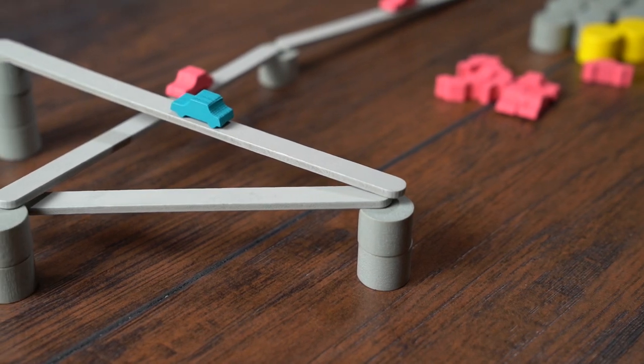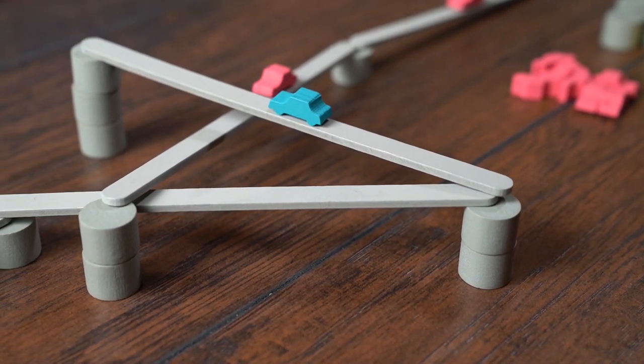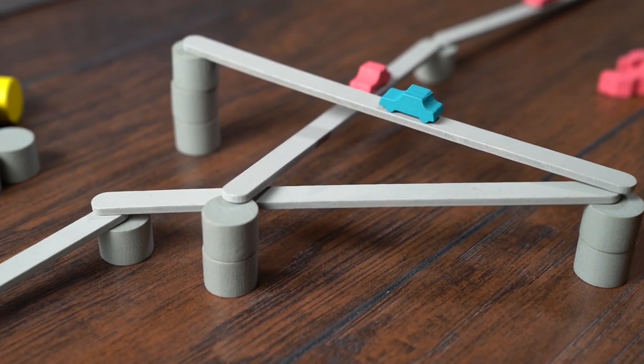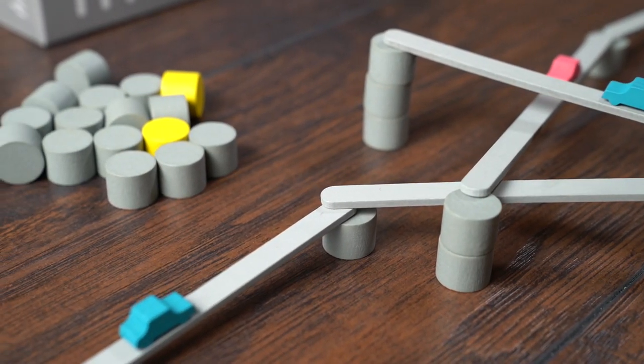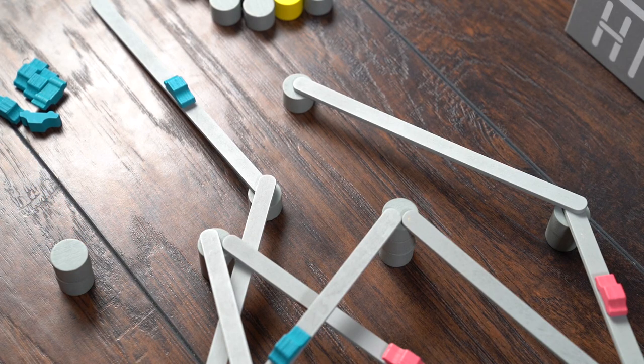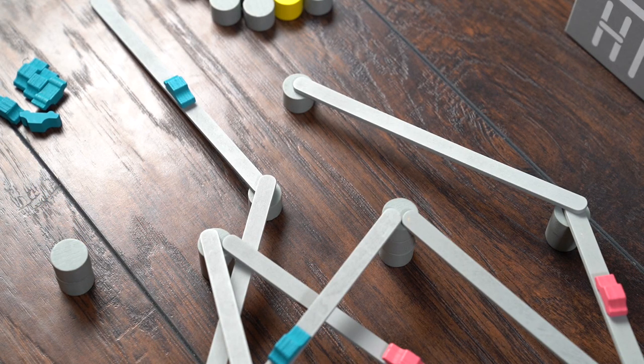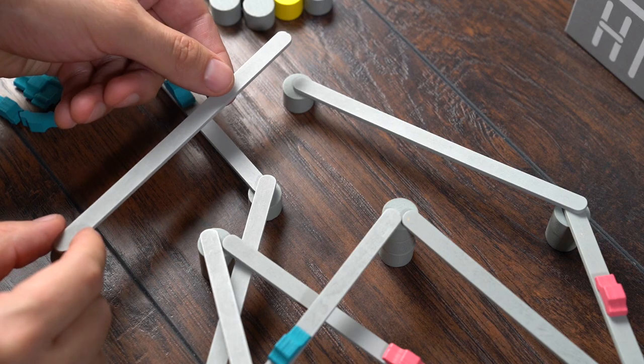But that also means building tall columns, and that uses more pillars, which will put you at risk of being eliminated from running out of pieces. On the other hand, if you build a tall column and your opponent knocks it over, they'll have to hand over lots of pillars themselves. There's some surprising depth to Tokyo Highway.